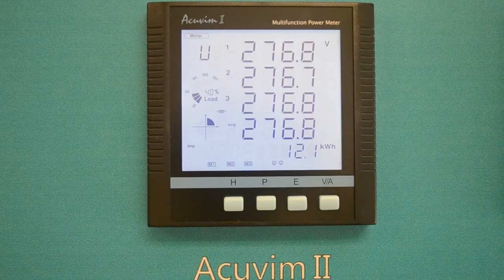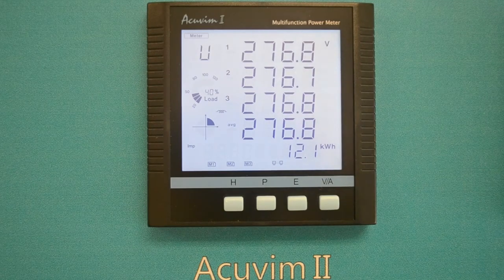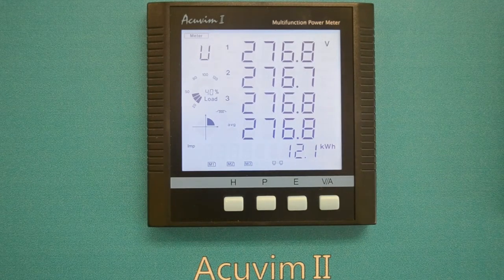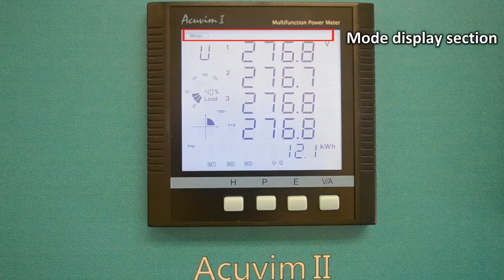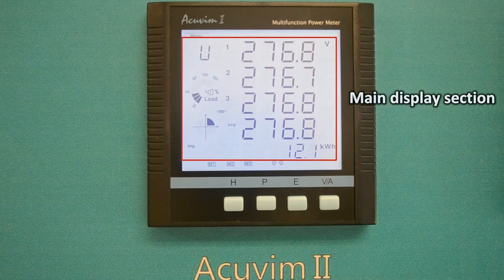First of all, we need to familiarize ourselves with the LCD screen itself. The screen is divided into three display sections which are mode display, main display, and indicator display.